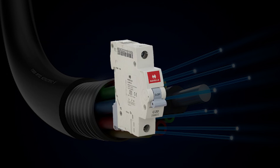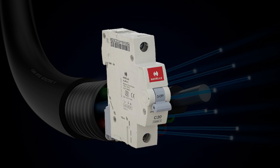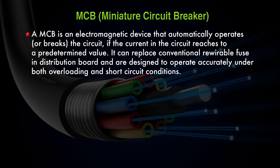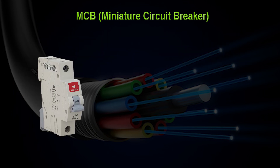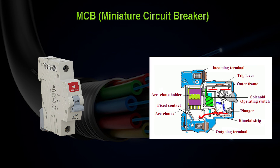A Miniature Circuit Breaker (MCB) is an electromagnetic device that automatically operates the circuit if the current reaches a predetermined value. It can replace conventional rewirable fuses in distribution boards and is designed to operate accurately under both overloading and short circuit conditions. The internal construction includes incoming and outgoing terminals, trip lever, outer frame, solenoid, operating switches, arc chute holder, arc chute, and fixed and movable contacts.